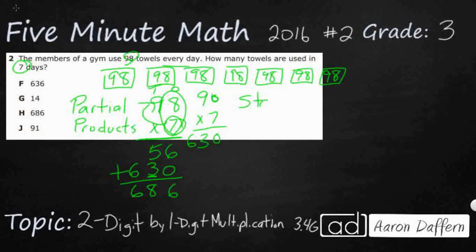Now, your parents are probably familiar with what we call the standard algorithm. Standard just means the normal or the traditional way. It's going to be very similar. We're just going to do one thing separate. 98 times 7.